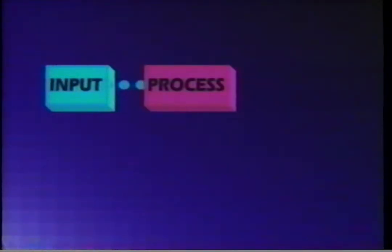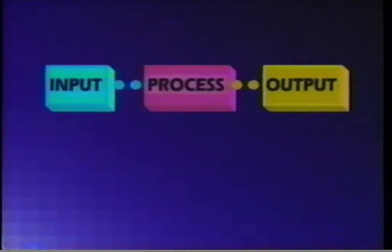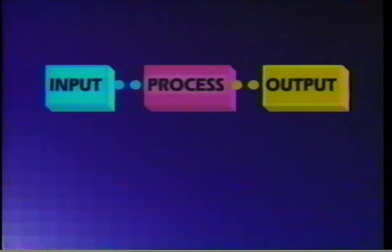We will start by looking at what a computer is. While computers are complicated machines, in general terms, they are really quite easy to understand. Simply put, three things happen in a computer: information moves in, known as input; information is changed, known as processing; and information is moved out, known as output. Input, process, and output — these are the basics of computing.